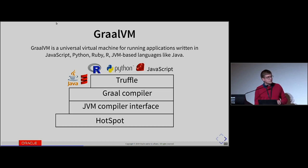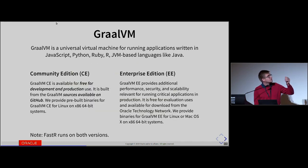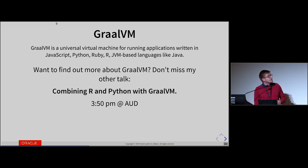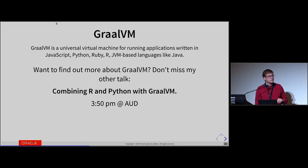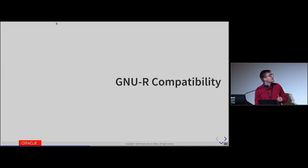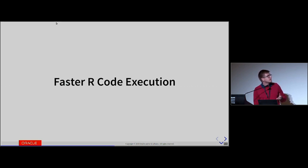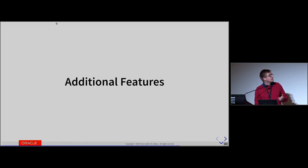There are two versions of Graal that are the same from the API point of view for the end user. The most important for us here is the Community Edition, which is free for any use, open source, and on GitHub. FastR runs on both versions. I'll be giving a talk about Graal and interop between R and Python at 3:50 p.m. in the auditorium. So let's take a look at FastR across four things: compatibility, faster code execution, tooling, and additional features.